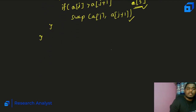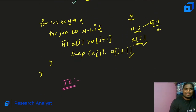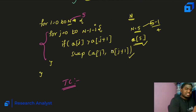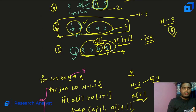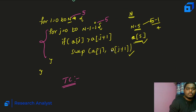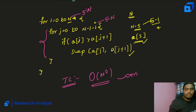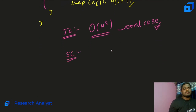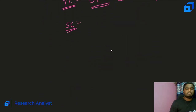Now let's analyze the time complexity of bubble sort. The outer loop runs n times, and in the worst case the inner loop also runs n times, so the time complexity is O(n²) in the worst case. The space complexity is O(1) — constant — because we don't use any extra space.